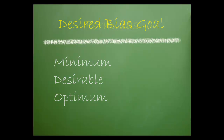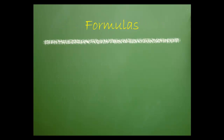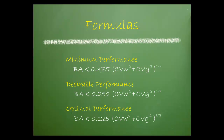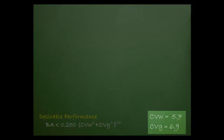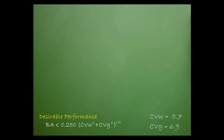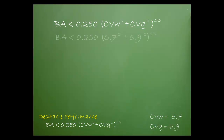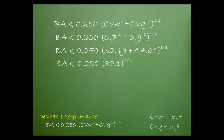Now that we have BV data and a desired performance goal, we can use the appropriate formula provided by Dr. Frazier. There are three separate formulas: one for minimum, desirable, and optimal performance. Let's practice calculating a desirable bias goal for serum glucose. Here are our CVW and CVG values from Dr. Westgard's site. We begin by copying down the formula and substituting in the values, then squaring 5.7 and 6.9, adding the values within the brackets, taking the square root of the product, and finally multiplying the remaining values. The SEA turns out to be 2.24% of the total allowable error.